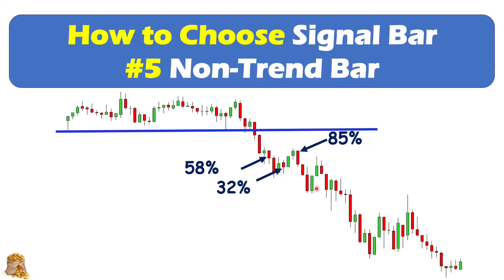After the market pulls back again, you can see the next bear bar here. The body is 56% of the whole candlestick, but the body is leaning to the bottom of the whole candlestick. So this leads to a trend — it's a start of the trend.